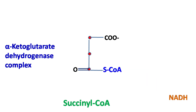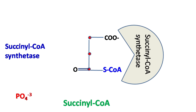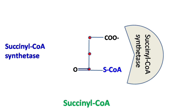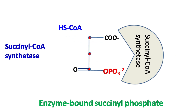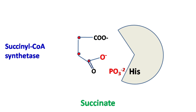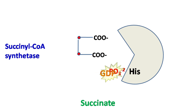Next, succinyl-CoA synthetase phosphorylates succinyl-CoA to give succinyl-phosphate that remains bound with the enzyme. During this reaction, the Coenzyme A molecule is released. In the next step, succinate is released and the phosphate remains bound with one of the histidine residues in the enzyme. GTP then reacts with this enzyme-bound phosphate to form GTP. The reaction carried out by succinyl-CoA synthetase is a reversible reaction.